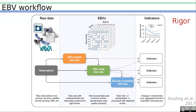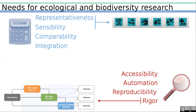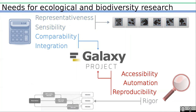In addition to the EBV concept, Kissling et al. identified in 2017 a detailed workflow from observations to indicators to achieve rigorous EBV computation. With these two first concepts, we get to fill three of our needs for ecological biodiversity research. Associated with the Galaxy project, our perspective is that we can bridge the five other identified needs.